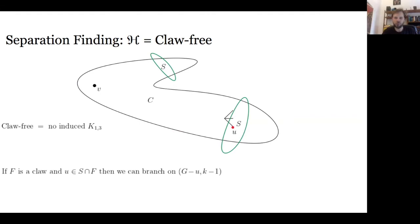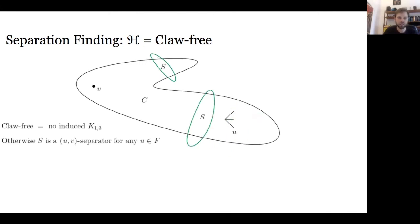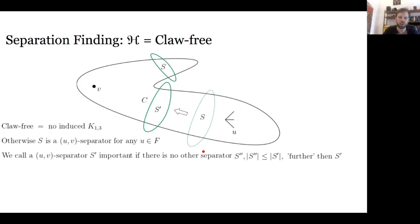If S intersects the fixed claw F, there are only a constant number of vertices in the claw. We guess which vertex lies in the intersection, remove it, decrease the parameter by one, and recurse — in the smaller graph there must exist an H-(k−1)-separation covering v. That was the easy case.